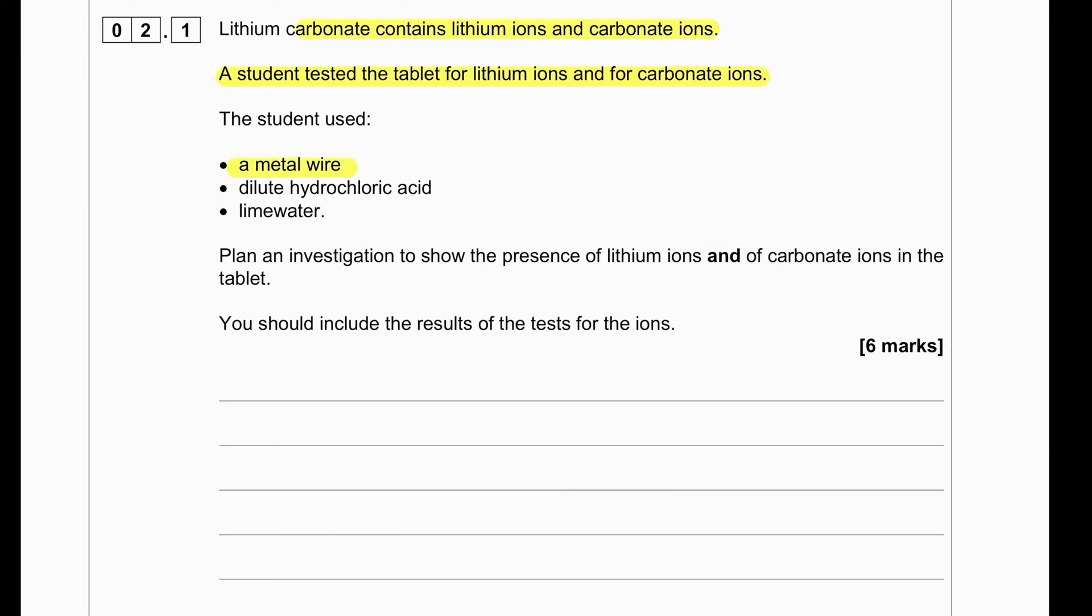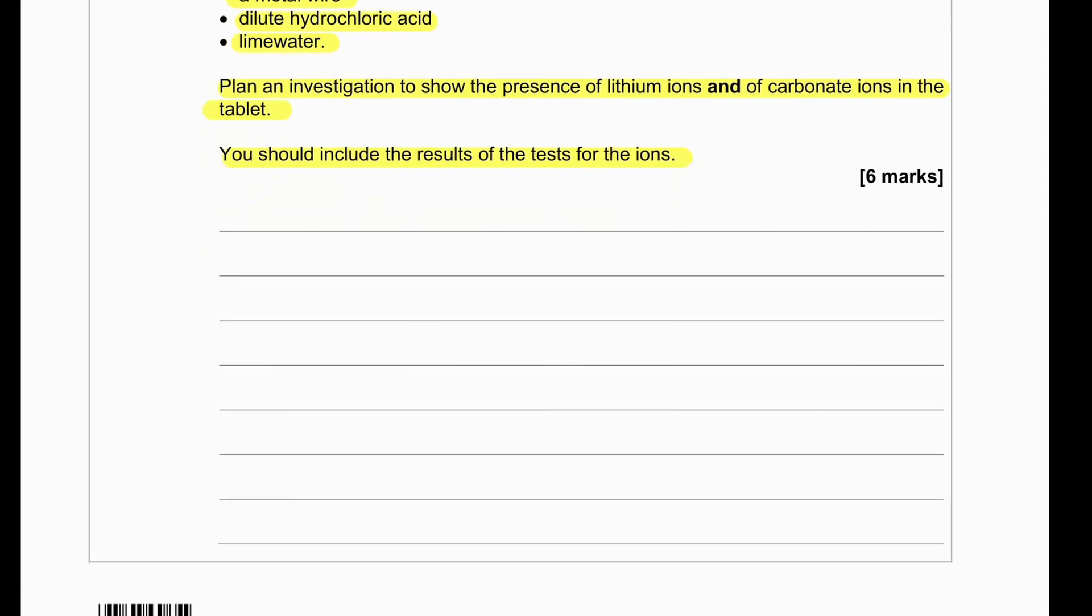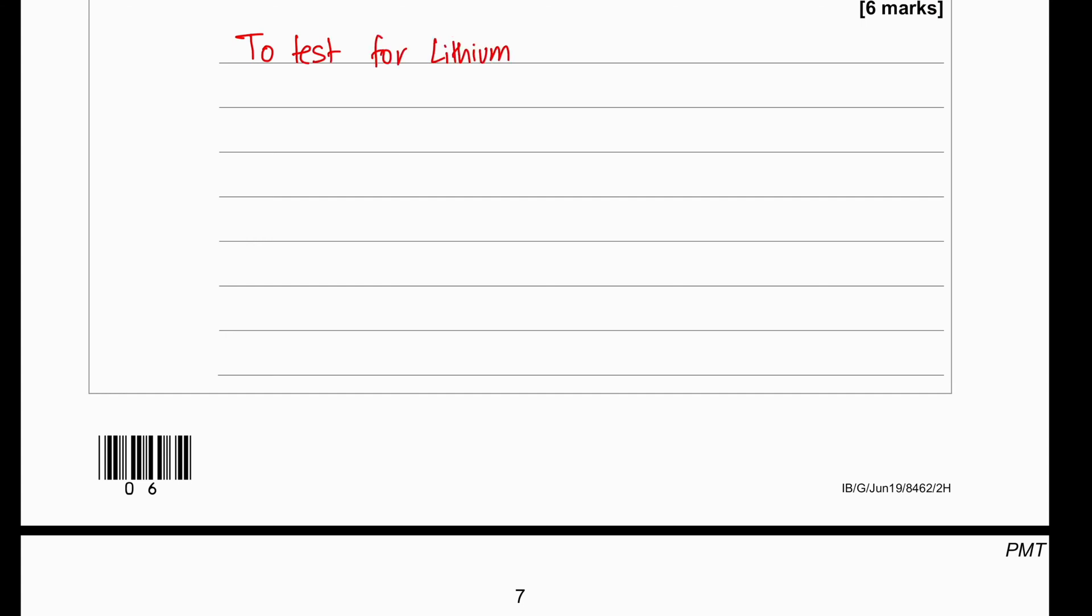A student tested the tablet for lithium ions and for carbonate ions. The student used a metal wire, dilute hydrochloric acid, and lime water. Plan an investigation to show the presence of lithium ions and carbonate ions in the tablet. You should include the results of the tests for the ions. So in order to do this particular investigation, what we have to do is we have to crush the tablet. Either dissolve it in water or we'll dissolve it in acid.